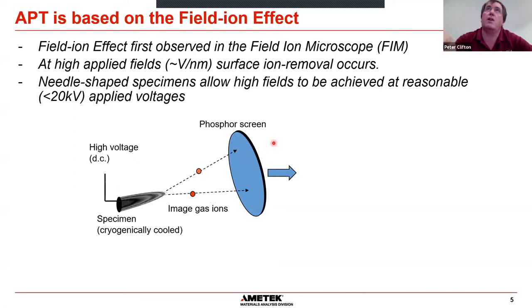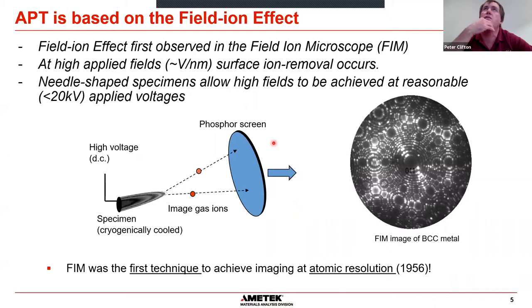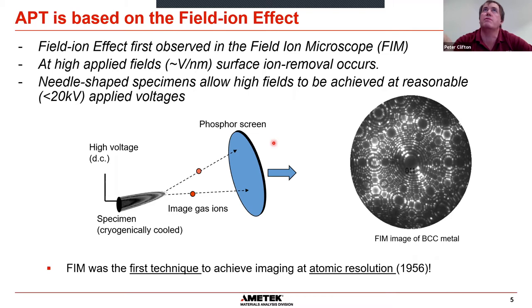This concept was first used 50 or more years ago in the field ion microscope, which was the first method to achieve atomic resolution imaging in 1956. Here's an example of a field ion image of a BCC metal such as tungsten — each of those rings are atomic planes and we get really nice imaging. Essentially, we have a big detector and a very small specimen — it's a projection microscope where field lines define the trajectories of the ions, giving something like a million times magnification.